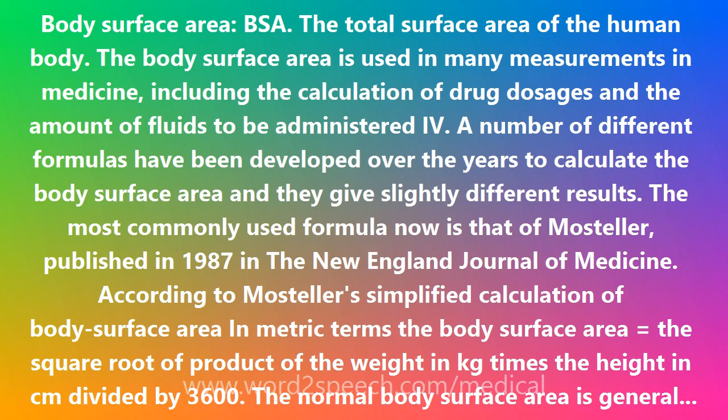A number of different formulas have been developed over the years to calculate the body surface area, and they give slightly different results. The most commonly used formula now is that of Mosteller, published in 1987 in the New England Journal of Medicine. According to Mosteller's simplified calculation, in metric terms, the body surface area equals the square root of the product of the weight in kg times the height in cm, divided by 3600.